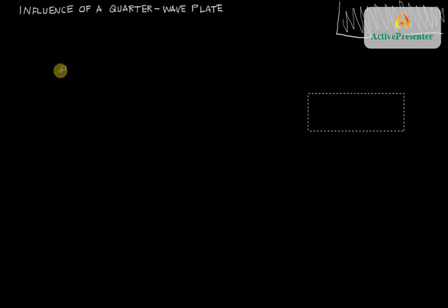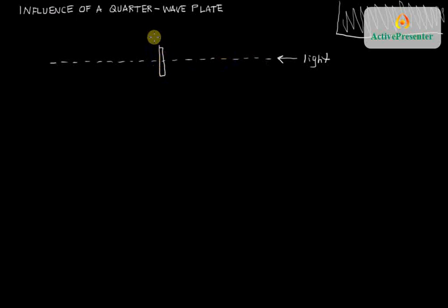This tutorial is going to explain the influence of a quarter-wave plate upon an incident polarization state. So to get rolling here, as before, we're going to consider an optical axis, and we're going to consider a beam propagating this way. And in the middle of the optical system, there's going to be a quarter-wave plate, QWP.